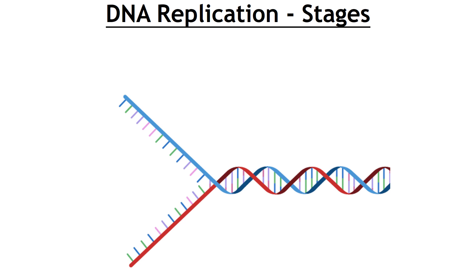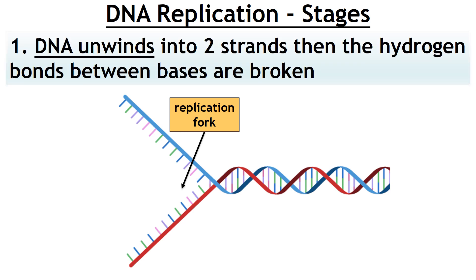So we're going to go through the stages. Here is the first stage. The first thing that happens is the DNA unwinds. You can see on the left it has unwound, the hydrogen bonds between the bases have broken, and what's called a replication fork is opened up. So: DNA unwinds.